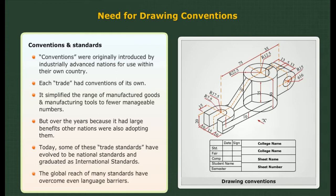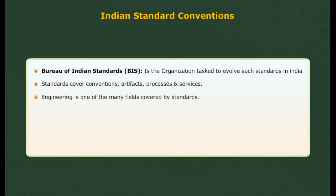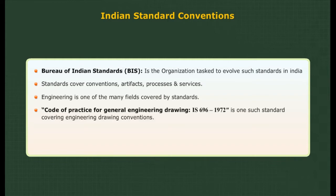The global reach of many standards has overcome even language barriers. Indian Standard Conventions: Bureau of Indian Standards (BIS) is the organization tasked to evolve such standards in India. Standards cover many fields, and engineering is one of them. The Code of Practice for General Engineering Drawing, IS 696:1972, is one such standard covering engineering drawing conventions.